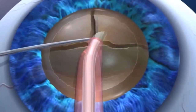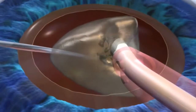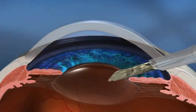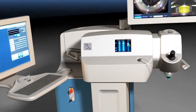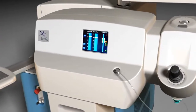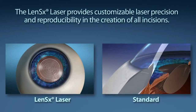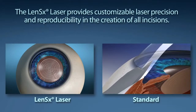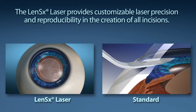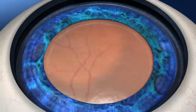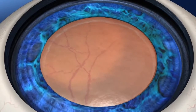Lens fragmentation, phacoemulsification, intraocular lens insertion, and incision closure are all steps in cataract surgery, and the LensX laser can assist with some of the most challenging of these. Standard cataract surgery starts with the creation of an incision through the cornea utilizing a scalpel to allow the surgeon access to the cataract. LensX provides customizable laser precision and reproducibility in the creation of the incision.